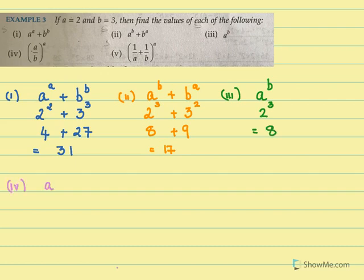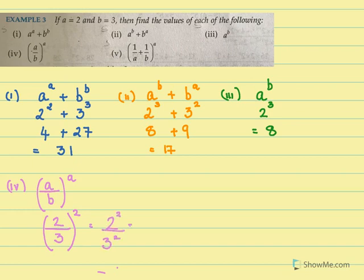For the fourth one, it is A over B, whole thing raised to A. We know A is 2 and B is 3, which means it is 2 raised to 2 over 3 raised to 2, and that is 4 over 9.